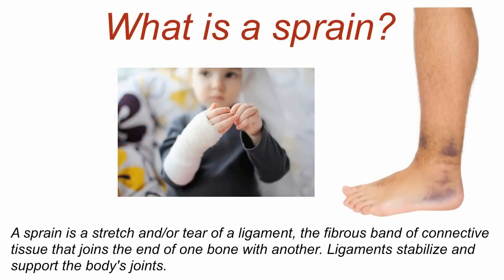What is a sprain? A sprain is a stretch and/or a tear of a ligament — the fibrous band of connective tissue that joins the end of one bone to the other. Ligaments stabilize and support the body's joints.